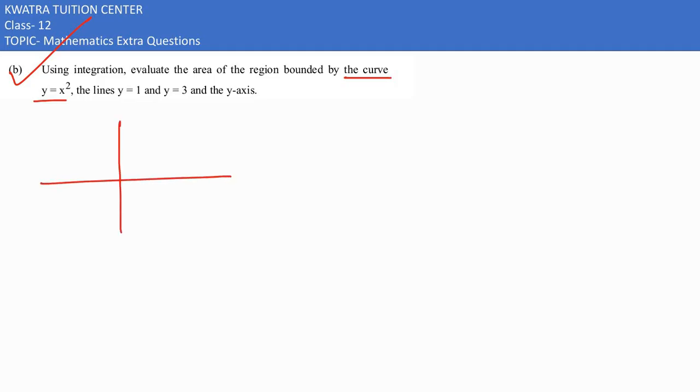Y equals x squared looks like the upper parabola. Okay, that's how it works. Now we have lines here. We need y equals 1 and y equals 3, so I would make a limit here.